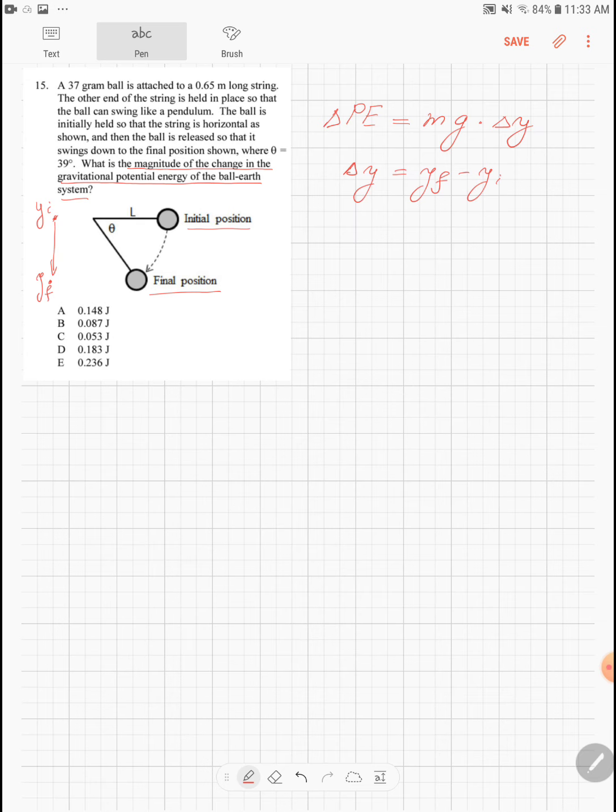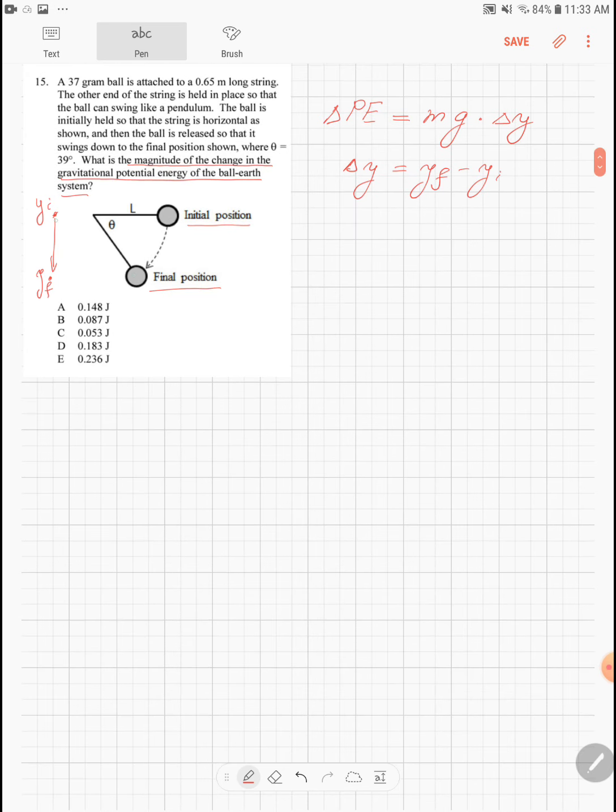Let me find delta y. To find delta y I will first consider this line over here and the length of this line I will call h. So delta y is simply minus h. Let me find h.